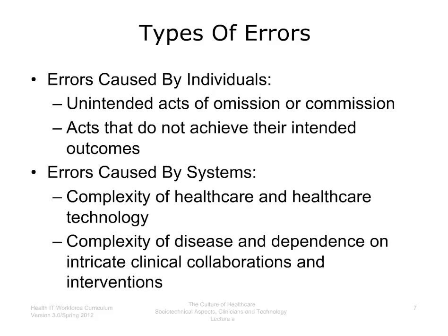There are two fundamentally different types of errors. The first are errors caused by individuals. These may be unintended acts of omission or acts of commission. An example of an unintended act of omission would be when a patient is transferred from one unit of the hospital to another and an important medication is left off the medication list. An example of an unintended act of commission would be when a medication intended for one patient is delivered to another patient.